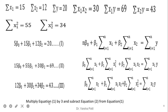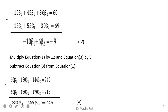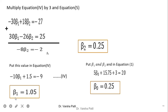To solve for beta 0, beta 1, and beta 2, we multiply equation 1 by 3 and subtract equation 2 from equation 1, giving: −10·β1 + 6·β2 = −9 (equation 4). Then we multiply equation 1 by 2 and equation 3 by 5 and subtract, giving: 30·β1 − 26·β2 = 25 (equation 5). From equations 4 and 5, we get beta 2 = 0.25 and beta 1 = 1.05.